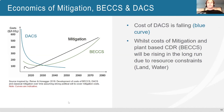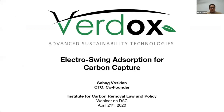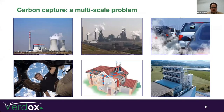Thank you so much. I'm Sahag Voskian, co-founder of Verdox — a company founded based on my work at MIT on electric swing carbon capture, or electric swing absorption. Carbon capture is indeed a multi-scale problem: concentrations span from 0.04% or 400 ppm in air all the way to 10–15% or even 40% in some industrial processes. In flow rates, it could range from 400 tons per hour in a 500-megawatt power plant to as low as 18–20 liters per second in a car tailpipe exhaust, or tens of thousands of cubic meters per second in a megaton direct air capture plant.